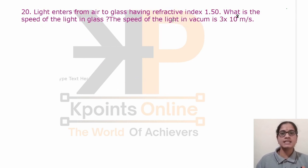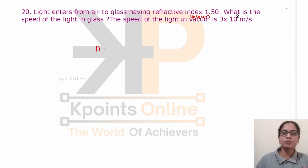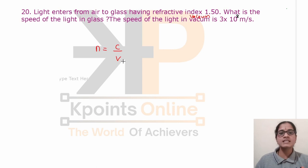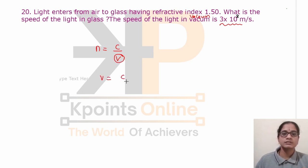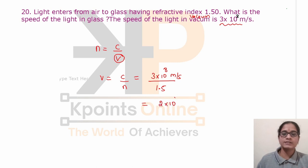Light enters from air to glass having refractive index 1.50. What is the speed of light in glass? Using the formula N = C/V, where N is the refractive index, C is the speed of light in vacuum (3×10⁸ m/s), and V is the speed of light in the medium: V = C/N = 3×10⁸ / 1.5 = 2×10⁸ meter per second. This is the speed of light in glass.